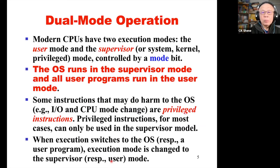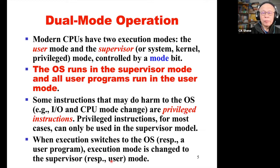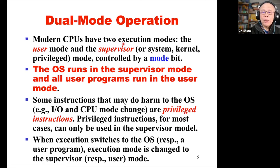Then we need some advanced support in order to make our program execution secure. The first concept we need to talk about is the so-called dual-mode operation. This is actually not a very new concept — it was there in the 1960s. Modern CPUs have two execution modes: the user mode and the supervisor mode, also referred to as the system mode, the kernel mode, or the privileged mode. How does the CPU know which mode it is in? There is a mode bit — or sometimes in some CPUs, there could be multiple mode bits.